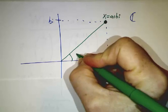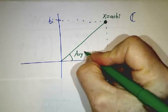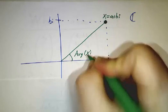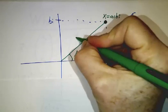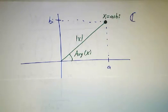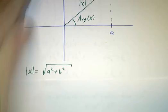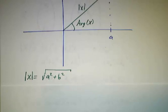And we sometimes do geometry. We call this angle the argument of x. And then this distance here, we call that the length of x. And of course, by the Pythagorean theorem, that length is the square root of a squared plus b squared.